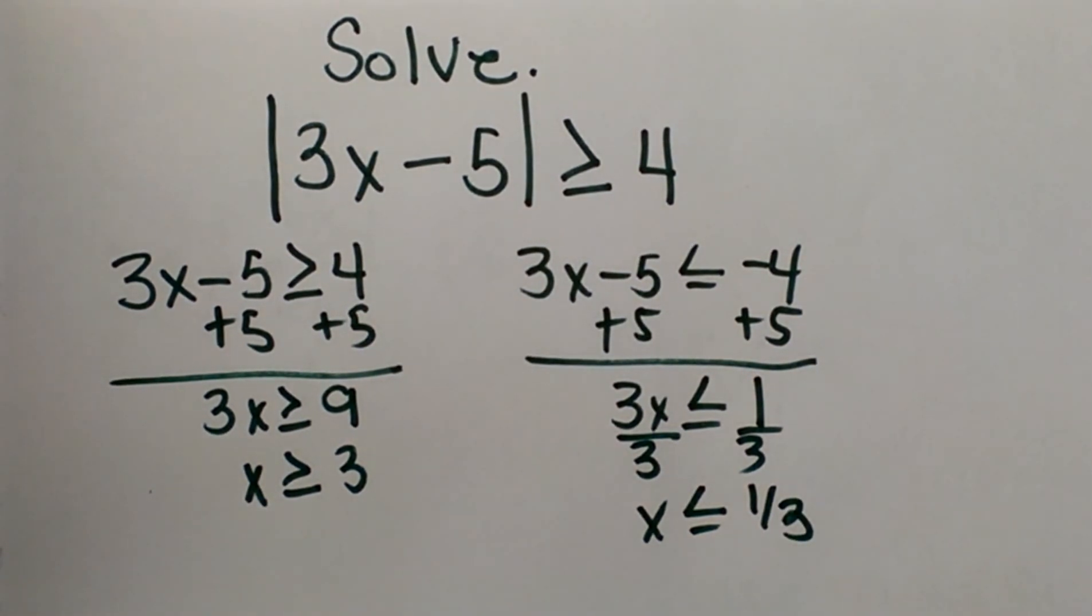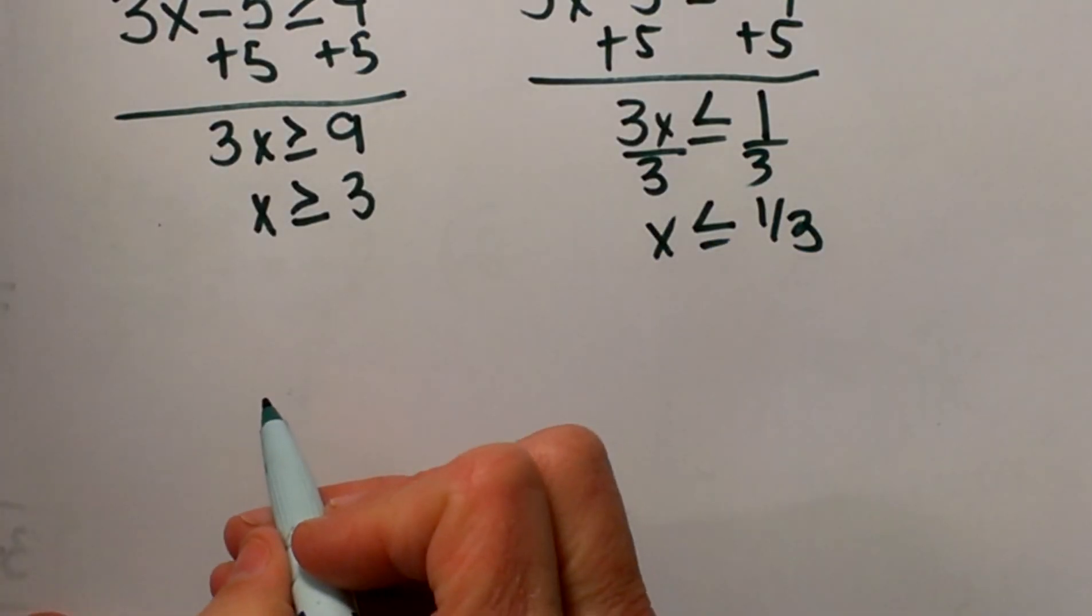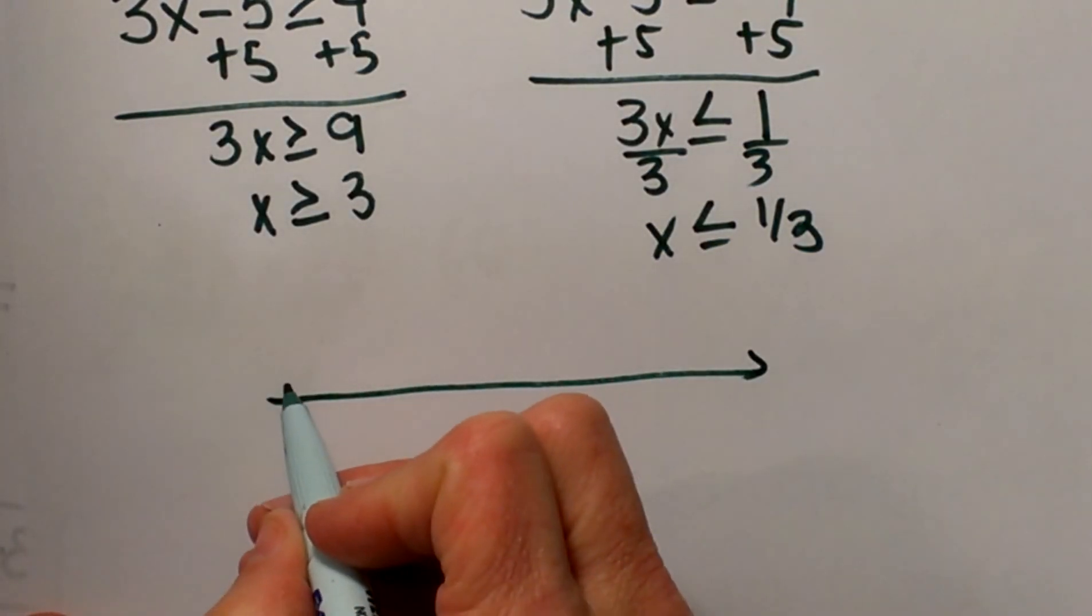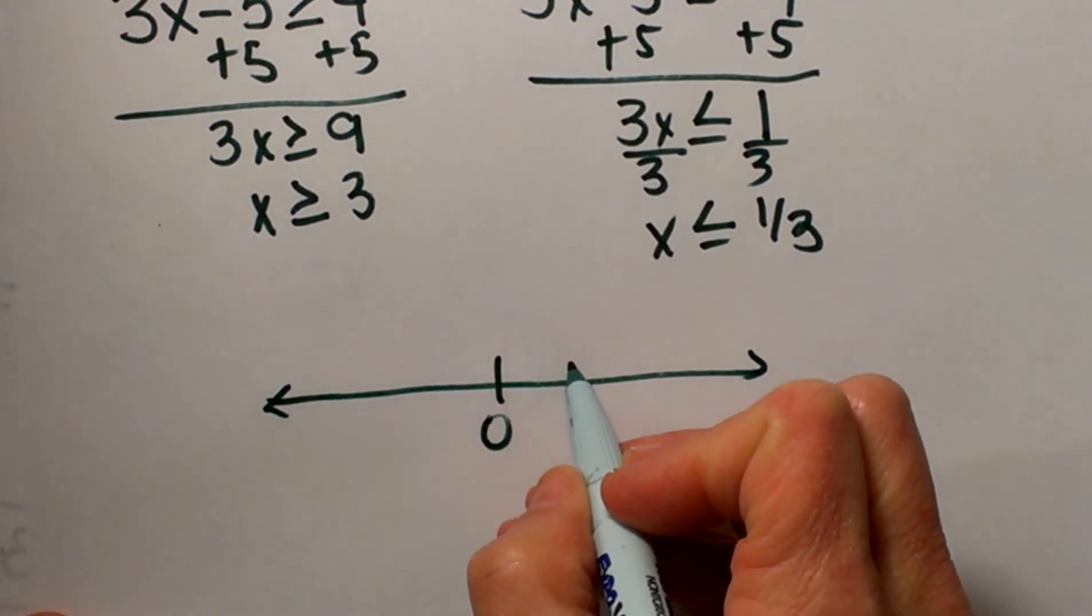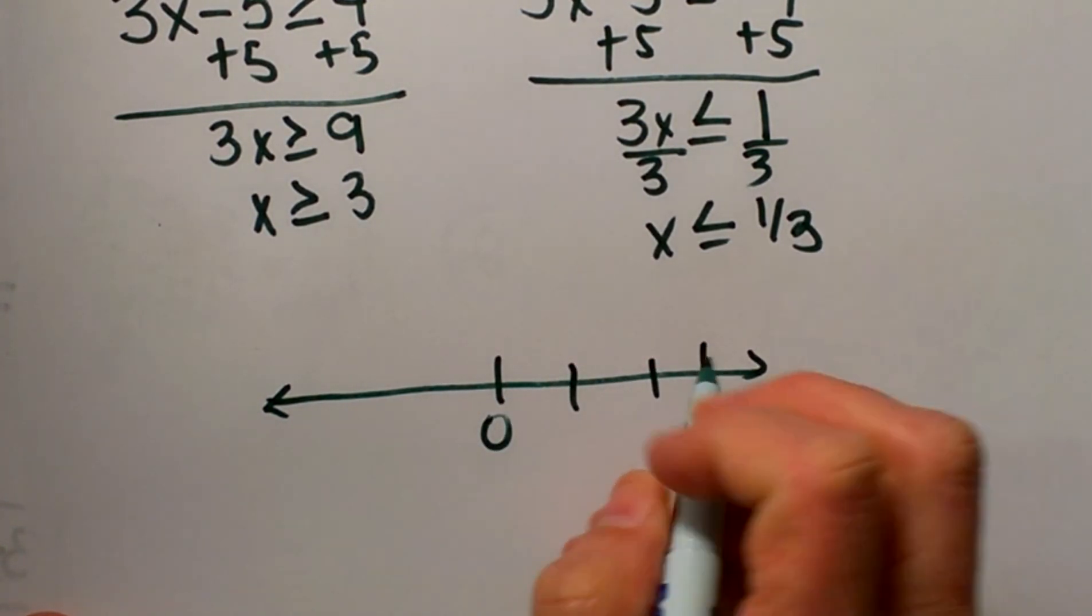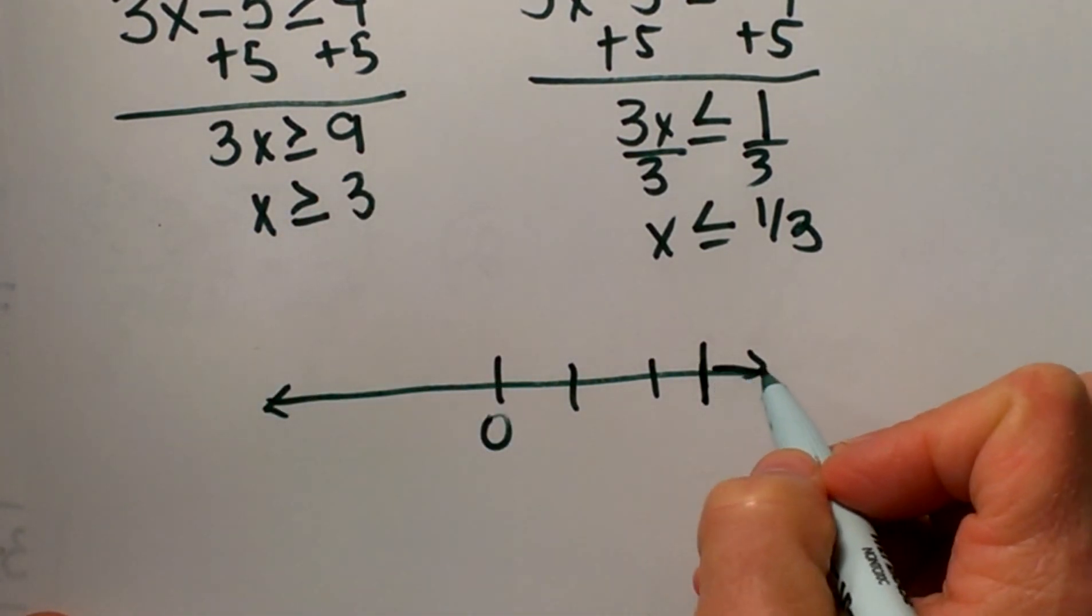So I have two inequalities. Now let's look at that on a number line. Here's my number line. Let's use 0 here, and then I have 1, 2, 3. For x ≥ 3, what is larger than 3? Well, 4, 5, 6.